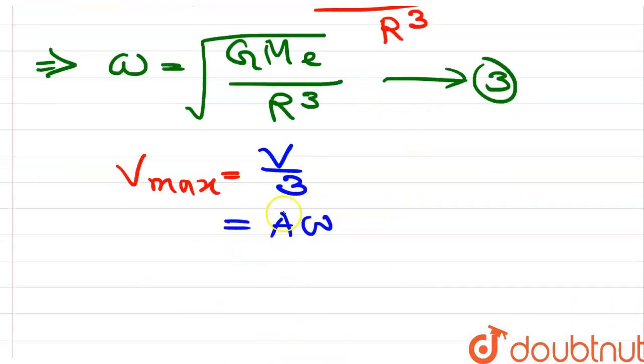Velocity of the particle will be v by 3, as given. So a times omega is equal to a omega times v by 3. So amplitude a is equal to R by 3.